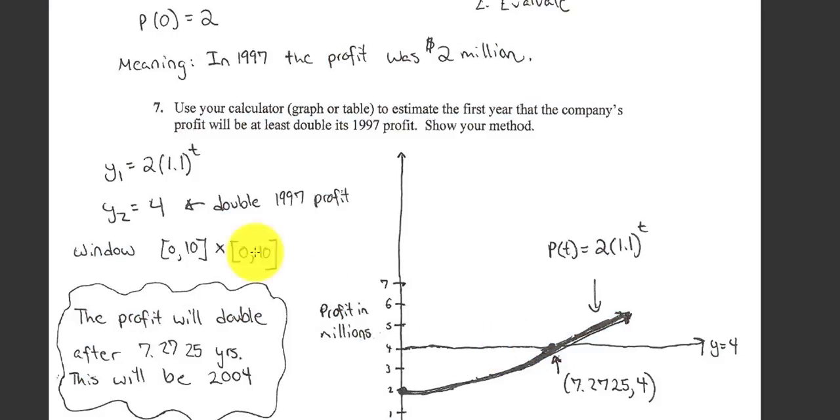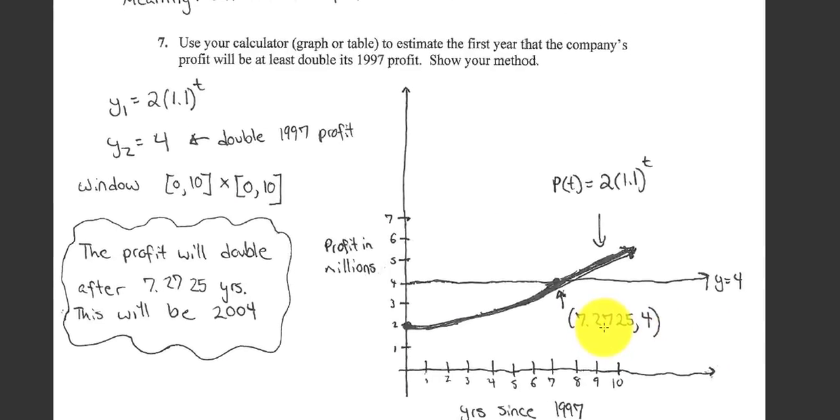So how long will it take to double the profit? About 7.27 years. And the work I'd like to see on the test, it says show your method. Well, sketch the graph. It doesn't have to be a Picasso, but I'd like you to sketch the graph and label the intersection.